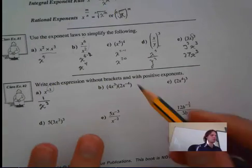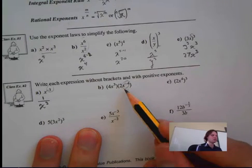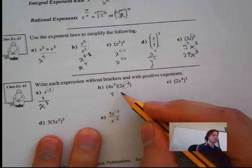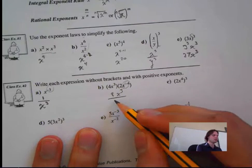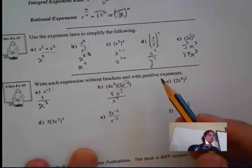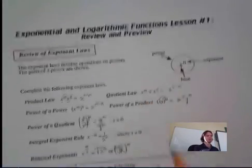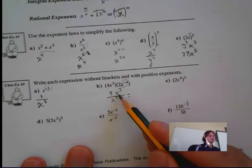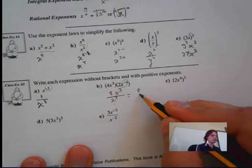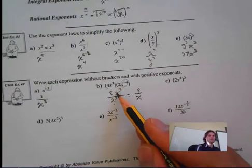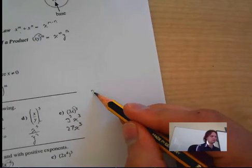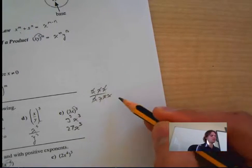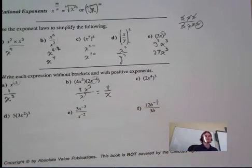Let's look at the next one. The only thing with a negative exponent is the x. So we have 2 times 4, which is 8, times x to the 3 on top, and x to the 4 on the bottom. Using the quotient rule — division — we subtract the exponents. The x's cancel and we're left with 8 all over x, because 3 minus 4 gives us x to the negative 1 on the bottom.